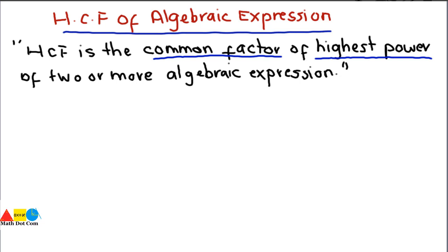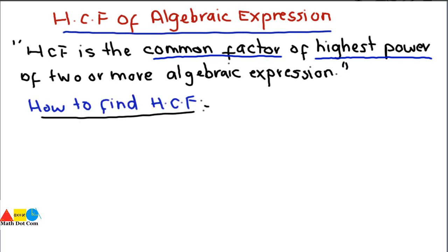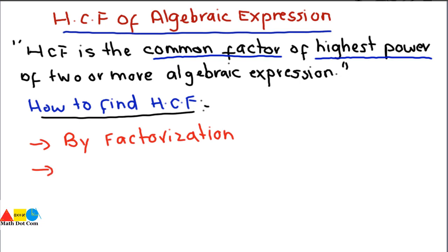We will start with how you can find the HCF of an algebraic expression. There are two methods we will discuss: one is by factorization, and the second one is by division, also called the successive division method. We will use different examples to understand these methods easily, starting from factorization and then division.